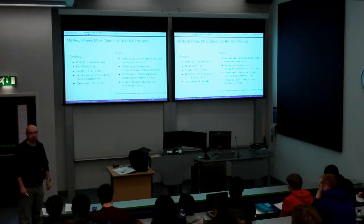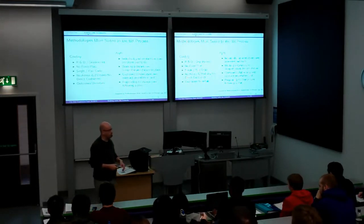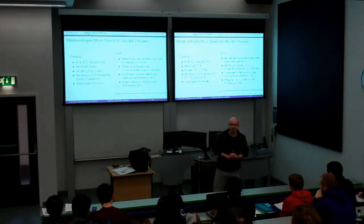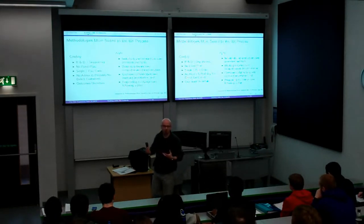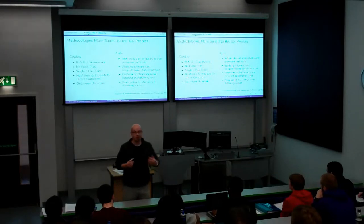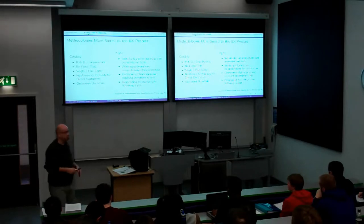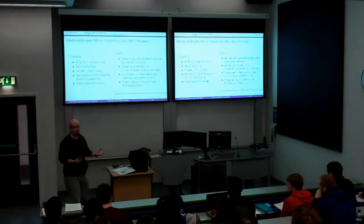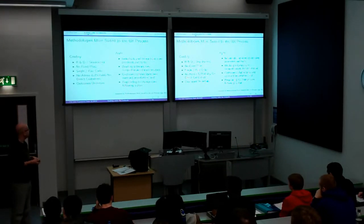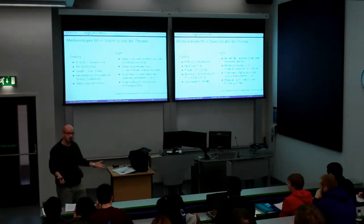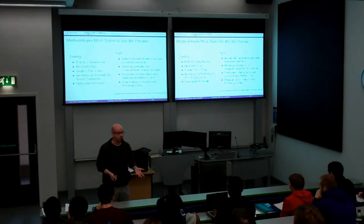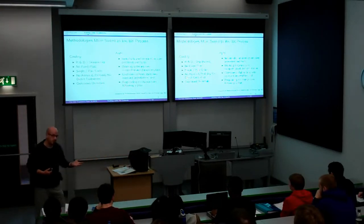There are four principles for Agile development. Agile was first discussed back in 2001 at Snowbird in Utah, where a number of software engineering luminaries got together and wrote down what they thought software engineering should be about. They had very little agreement apart from these four things and twelve overriding principles. The first is individuals and interactions over processes and tools — which is right for user experience, because it's about people. Working software is like the iterative prototyping we do in UX.